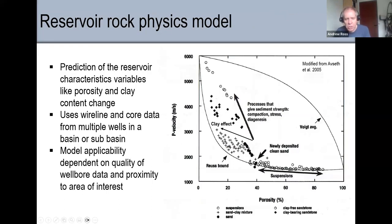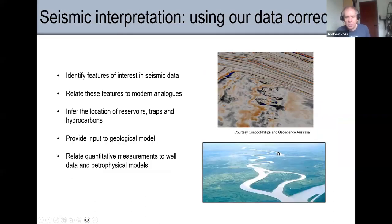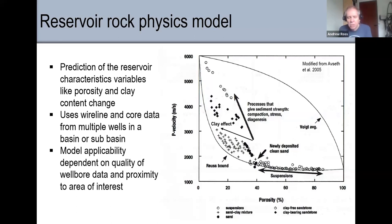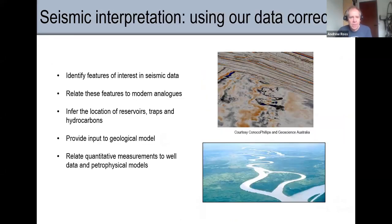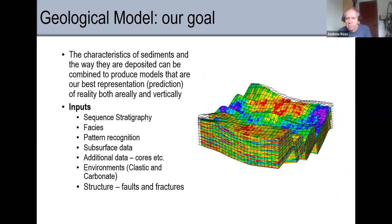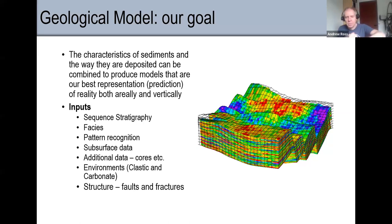Sometimes I can just use impedance from full-stack data. Depending on the rock physics, I may need information about Vp/Vs and density to take out fluid effects — so I need AVO inversion. What we're trying to get out of this is a reservoir model, a geological model that we use as input into reservoir modeling and economics calculations.